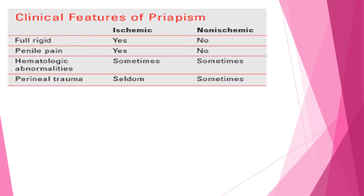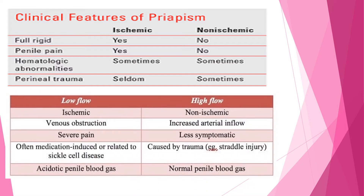Ischemic Priapism is mainly characterized by a fully rigid penis with penile pain, most often associated with hematological abnormalities, and typically no history of trauma. Non-ischemic Priapism, by contrast, presents with a penis that is not fully rigid and not painful, and is most often associated with perineal trauma. Ischemic low-flow Priapism involves venous obstruction, whereas non-ischemic involves increased arterial flow without obstruction. Ischemic Priapism is often medication-induced or related to sickle cell disease, while non-ischemic is mostly caused by trauma.